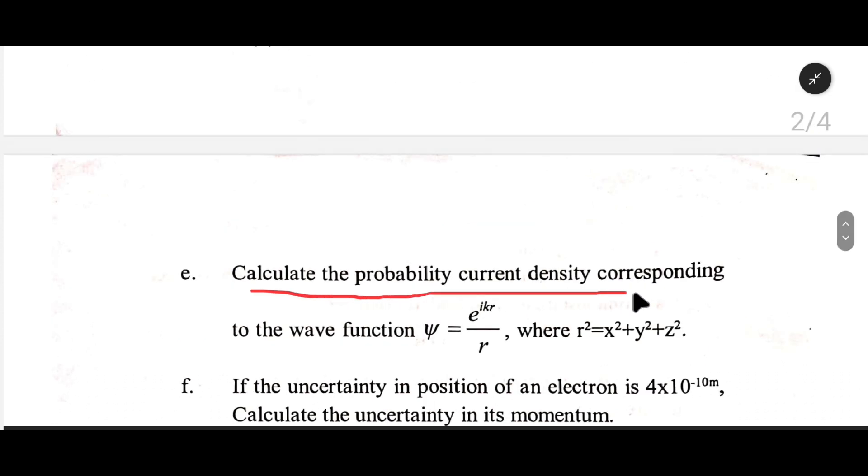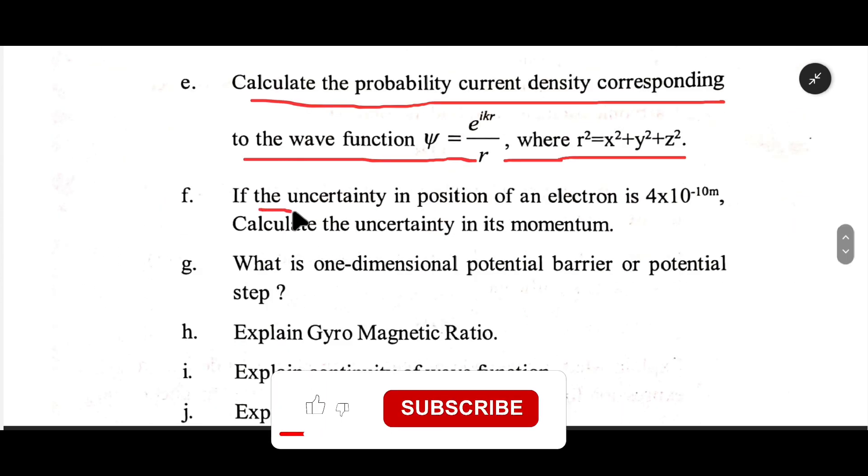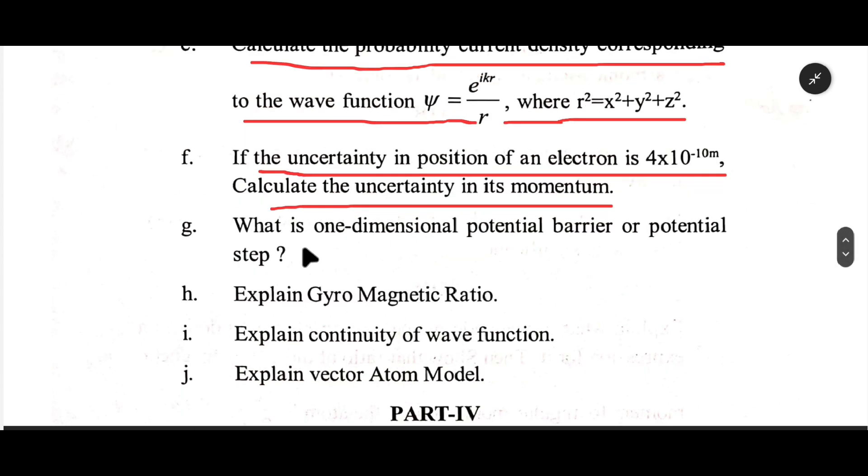e. Calculate the probability current density corresponding to the wave function psi equals e to the power ikr divided by r, where r squared equals x squared plus y squared plus z squared. f. If the uncertainty in position of an electron is 4 by 10 to the power 10 meters,